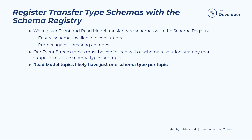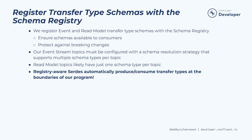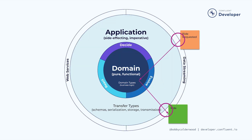On the other hand, read model topics will often only require one schema type per topic. Kafka's Serialization Deserialization, or SERDE system, integrates with the schema registry to automatically produce and consume our transfer types at the boundaries of our program. As a bonus, if our command and query web service APIs use Protobuf or Avro, we could also use those transfer type schemas to define our web service interface with gRPC or a similar framework.